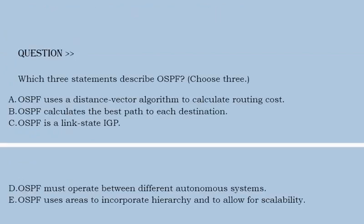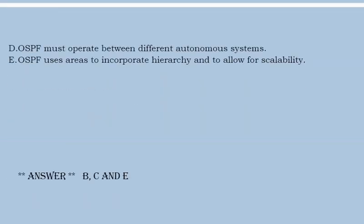Next question is, which three statements describe OSPF? Choose three options. Option A, OSPF uses a distance vector algorithm to calculate routing cost. Option B, OSPF calculates the best path to each destination. Option C, OSPF is a link state IGP. Option D, OSPF must operate between different autonomous systems. Option E, OSPF uses areas to incorporate hierarchy and to allow for scalability. Correct answer is option B, C, and option E.